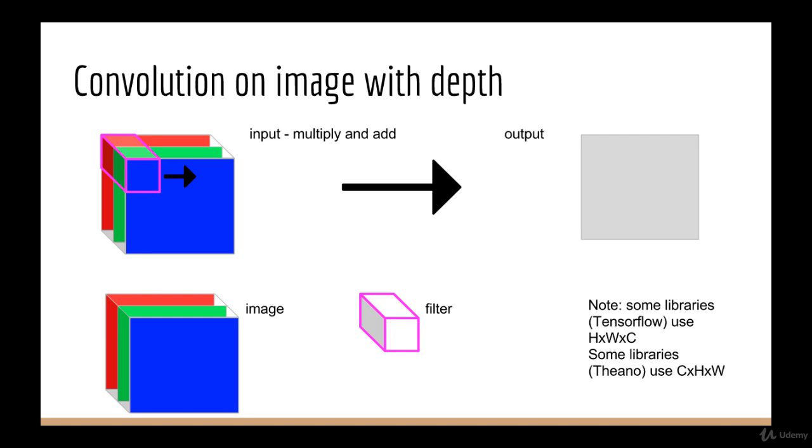So how do we do convolution when we have a 3D tensor as input? Well, it's still a 2D convolution. We still slide the filter across the image, just that the filter also now has three color channels, so you can think of it as a small box instead of a small square. But the operation is the same. We slide the filter over every part of the image, multiply everything in the 3D box element-wise, and add them all together and we get the output. The weird thing about this, though, is that the output is a 2D image.